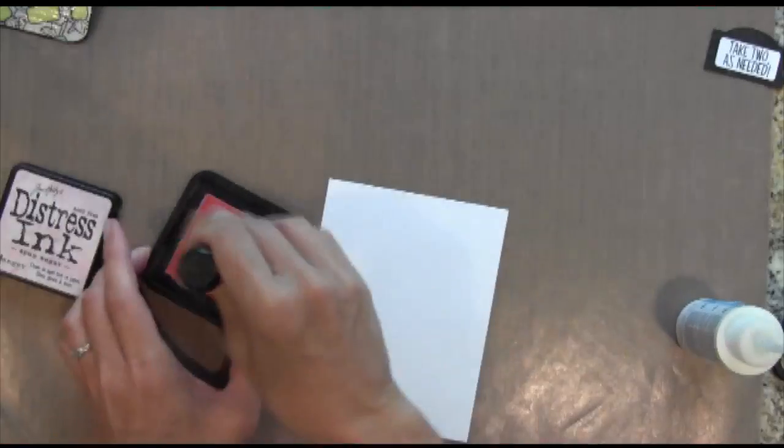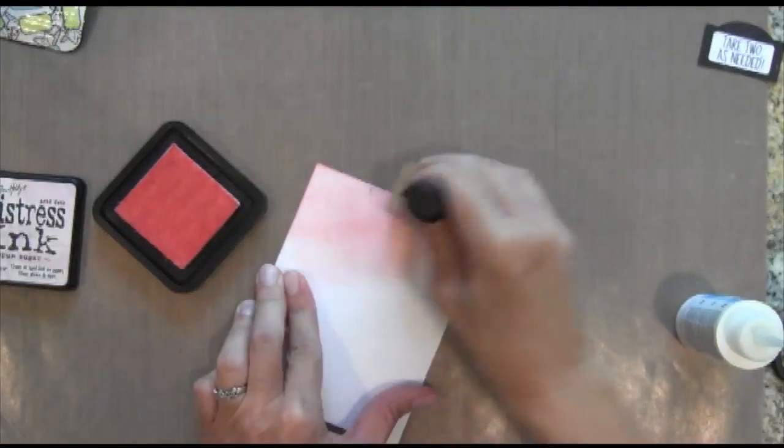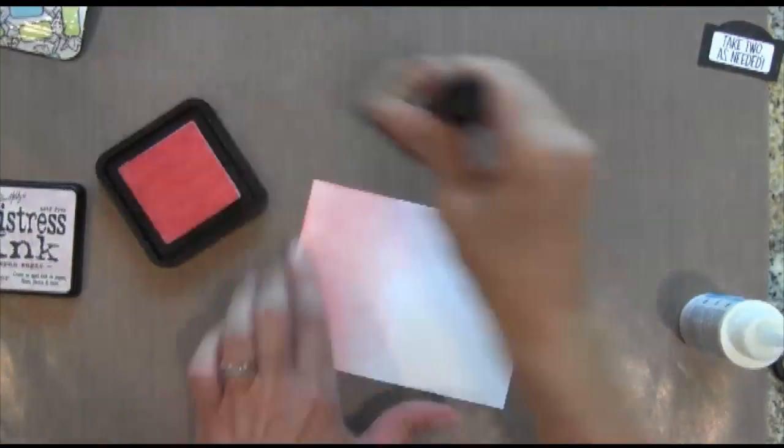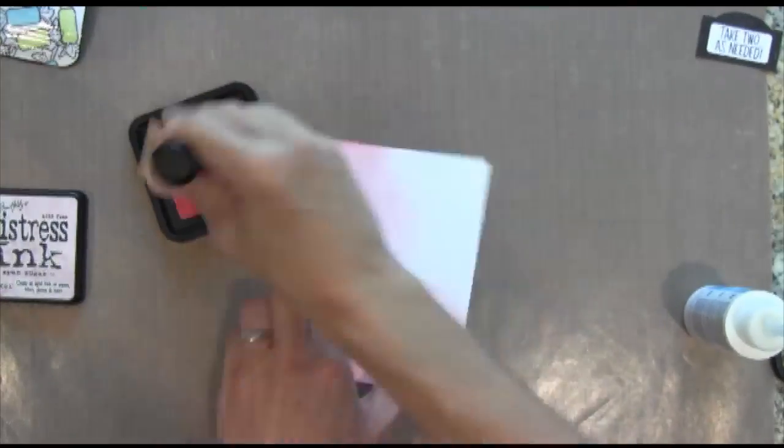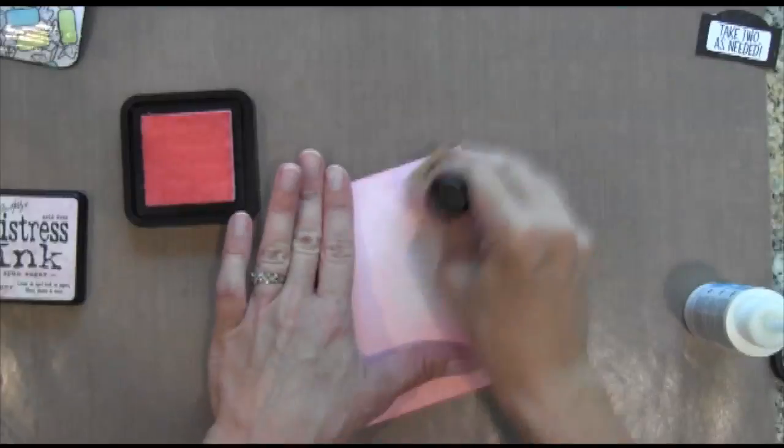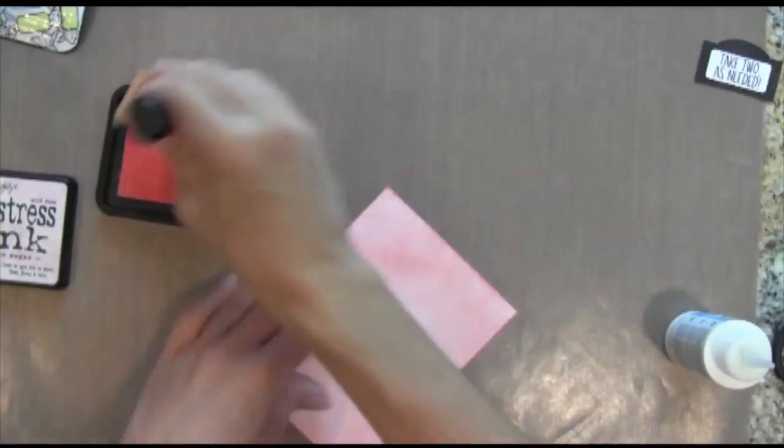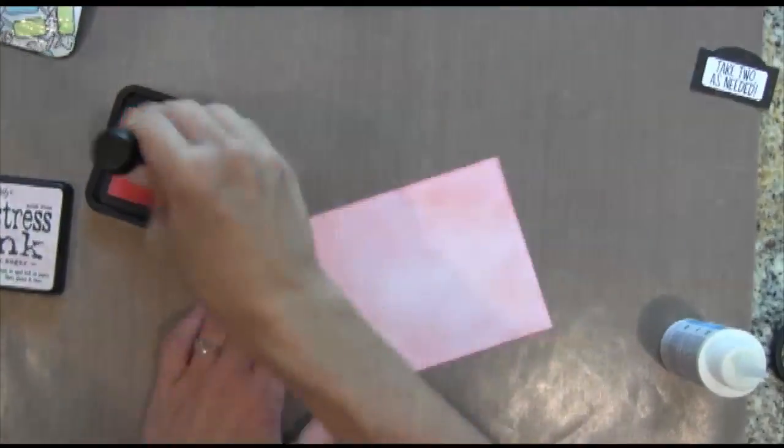Okay, so now I'm going to start with my background. I'm going to take the Spun Sugar and I'm going to apply my ink with an ink applicator. And there's a tutorial on my blog on how I do this. So if you want to go to my blog in the right hand margin, you'll find the tutorials link and just click that and you'll be able to find it.